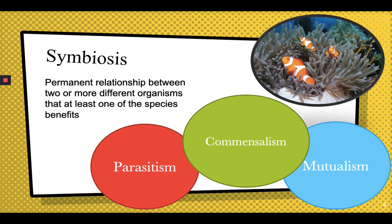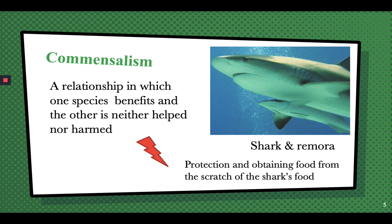First, commensalism is a relationship in which one species benefits and the other is neither helped nor harmed. An example of a commensalism relationship is the shark and remora — the remora gets protection and obtains food from the scraps of the shark's food, but the shark doesn't get any help or harm from this relationship.